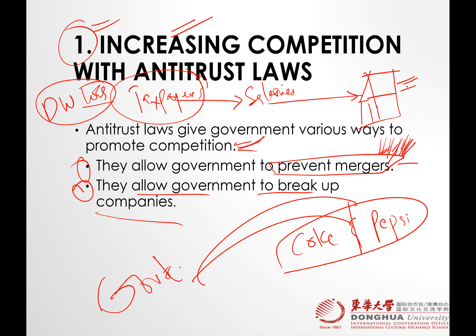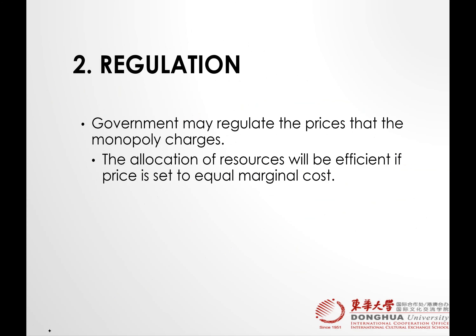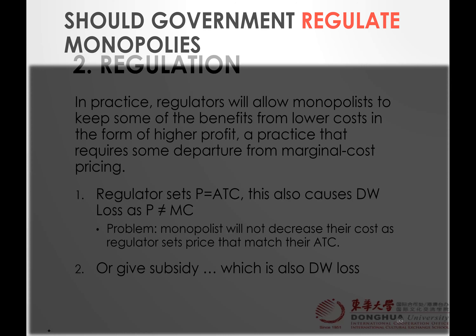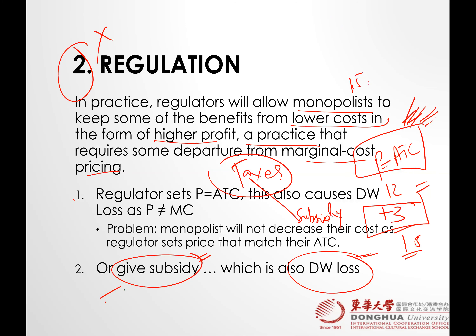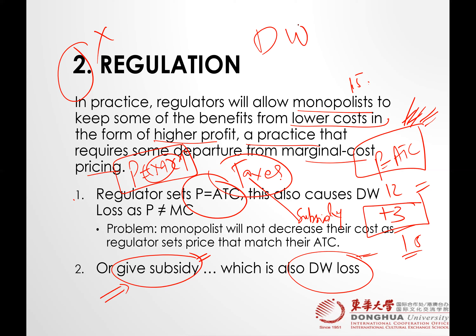In the case of increasing competition — number two, regulating behavior — you are also creating deadweight loss by giving subsidies. If you make them charge price equal to average total cost, or if you make them charge price equal to MC, they will not innovate; they will not embrace innovation because they need to show you higher MC in order to get huge profits. So regulating behavior is also going to transfer the deadweight loss to the whole society because it involves taxpayer money.